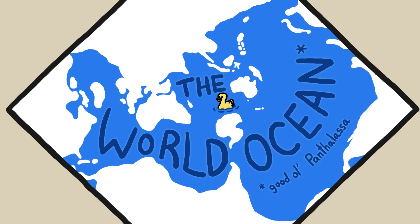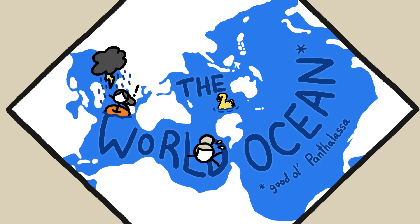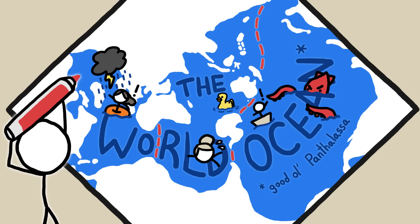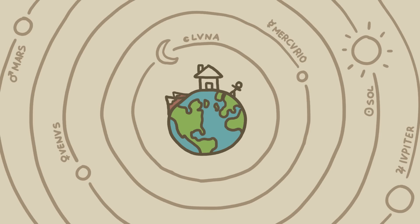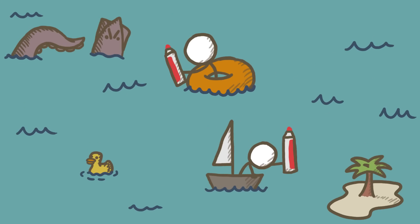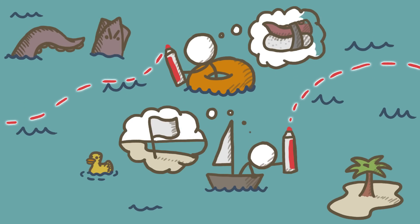But that makes it hard to talk about different parts of the ocean on different parts of the planet. It makes sense to split it up. But how do you divide a continuous body of water? Since we humans have a habit of making things all about us, historically we have divvied up all that water based on our own perceptions.